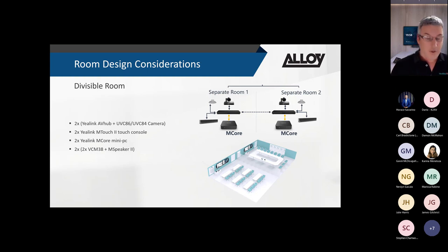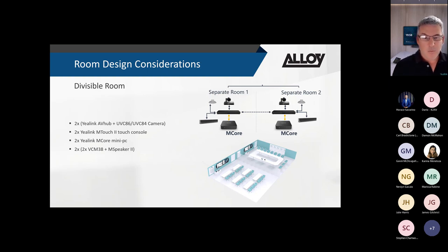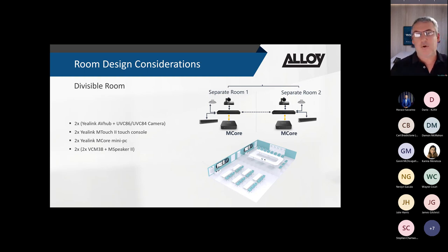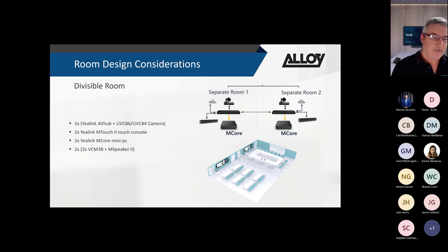When combining rooms, the Yealink audio must stay within the capacity of a single system. For ceiling mics, the maximum is 8 units per system, so each room can have a maximum of 4. For speakers, the maximum is 4 total, meaning only 2 per room. Exceeding these limits when rooms combine will not work.